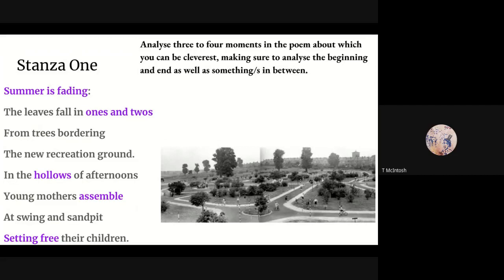So your next part: analyse three to four moments in the poem about which you can be cleverest, making sure to analyse the beginning and the end as well as something in between. We'll start with the first line: "Summer is fading." That's your central metaphor for the poem — the seasons. Another central metaphor is the day. Both run throughout the poem, as they do in Wordsworth, Keats's To Autumn, Emily Dickinson's As Imperceptibly As Grief, and Seamus Heaney's Death of a Naturalist. "The leaves fall in ones and twos from trees bordering the new recreation grounds. In the hollows of afternoons, young mothers assemble at swing and sandpit, setting free their children."